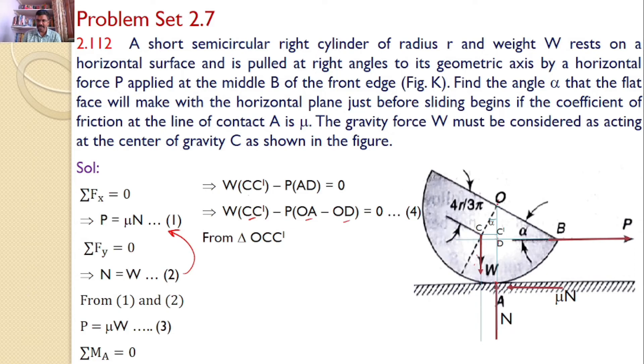From the right angle triangle OCC', CC' becomes the opposite side. And you know this side is equal to 4R/(3π), that is given. So this side because it is the centroid. So 4R/(3π) into opposite side. Hence, you will get CC' = (4R)/(3π) × sin α.